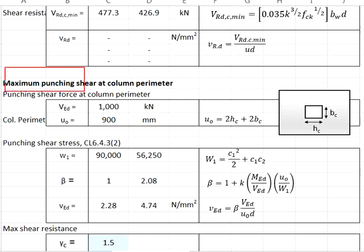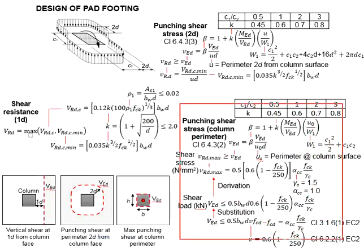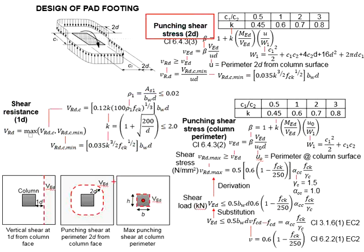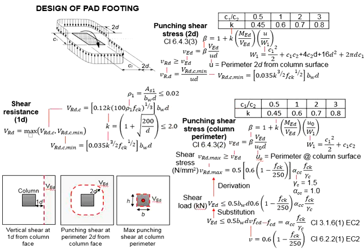Next, we will check the maximum punching shear at the column perimeter. This is the third shear plane that we need to check. So far, we have done checking the shear resistance at the 1D shear plane, and also for the punching shear at the 2D perimeter. We found that the punching shear at 2D will not happen, since the shear plane falls outside of the pad footing. There is one more punching shear to check, which is along the perimeter of the column. We need to make sure that the column does not punch through the pad footing due to excessive axial loads with the influence of the moment acting in the minor axis.